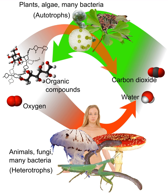Detritivores are heterotrophs which obtain nutrients by consuming detritus, decomposing plant and animal parts as well as feces. Saprotrophs, also called lysotrophs, are chemoheterotrophs that use extracellular digestion in processing decayed organic matter. It is a term most often associated with fungi. The process is most often facilitated through the active transport of such materials through endocytosis within the internal mycelium and its constituent hyphae.